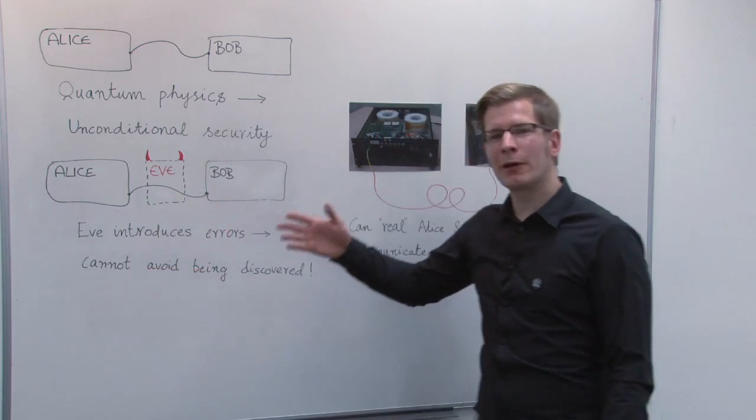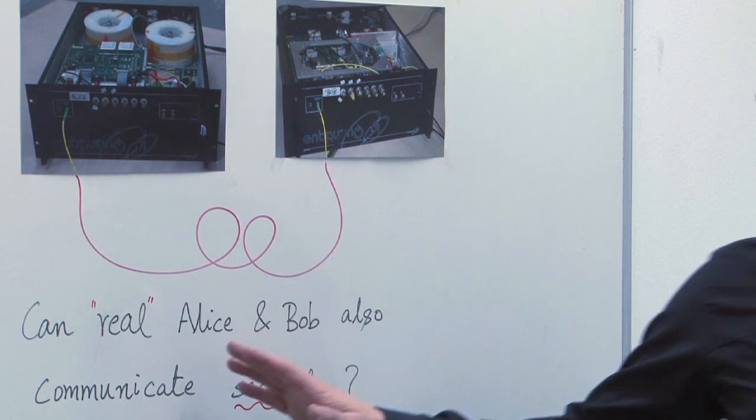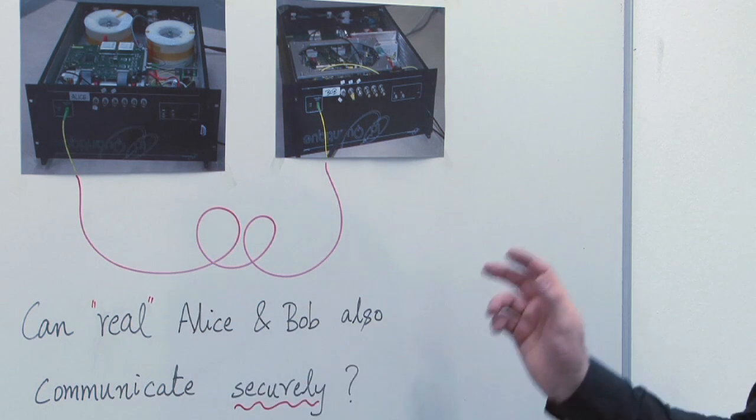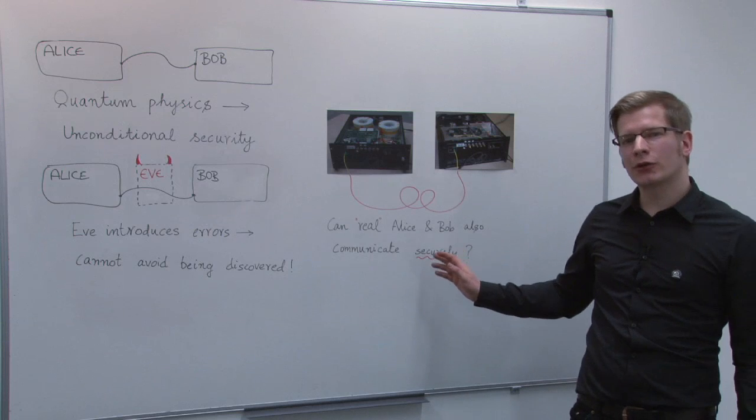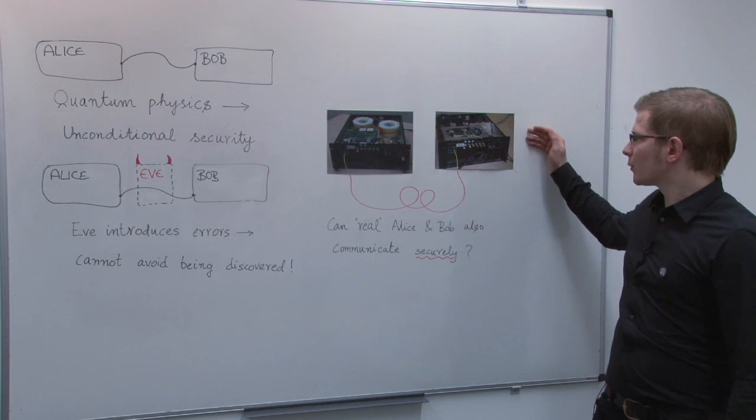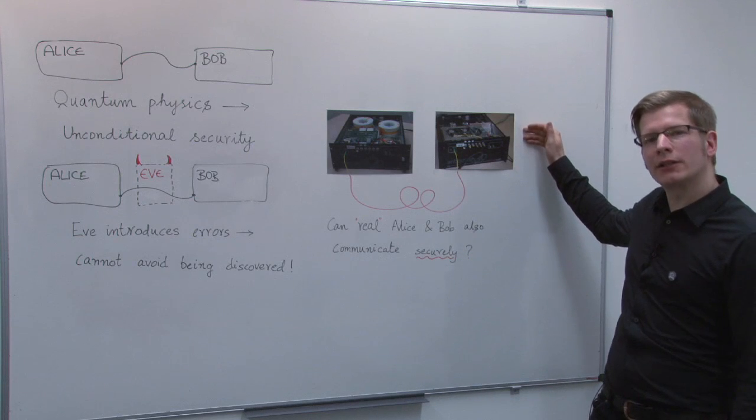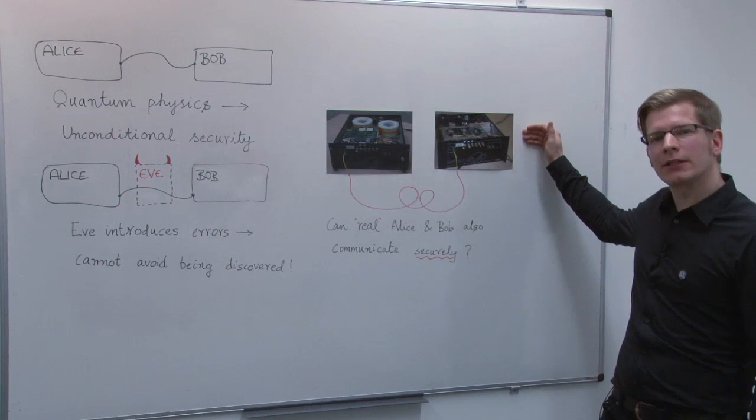But what about in practice? In the next minutes, we'll ask the question, can real Alice and Bob communicate securely? And we'll show you that real device properties should be taken into account in the security proof. Otherwise, we'll get security problems.